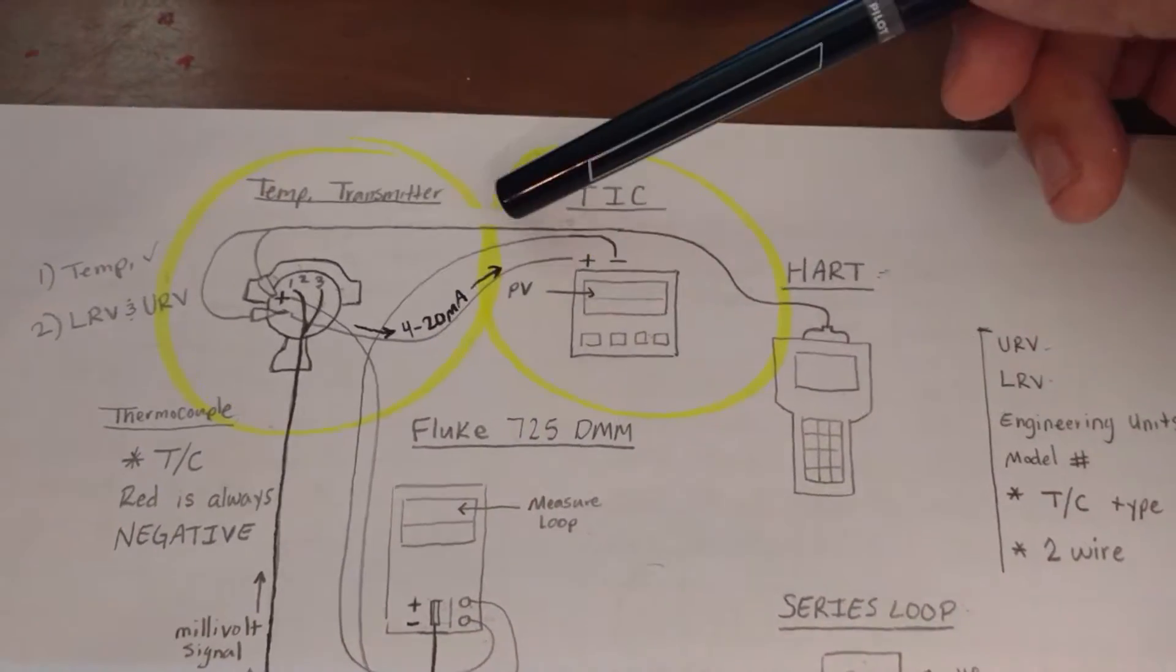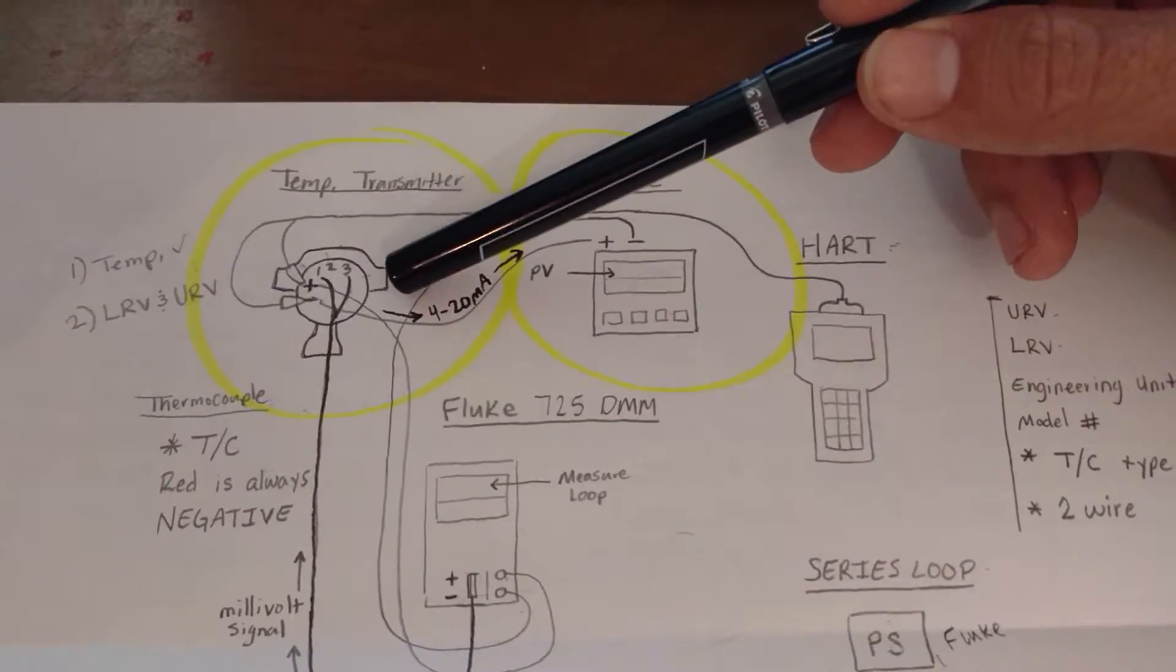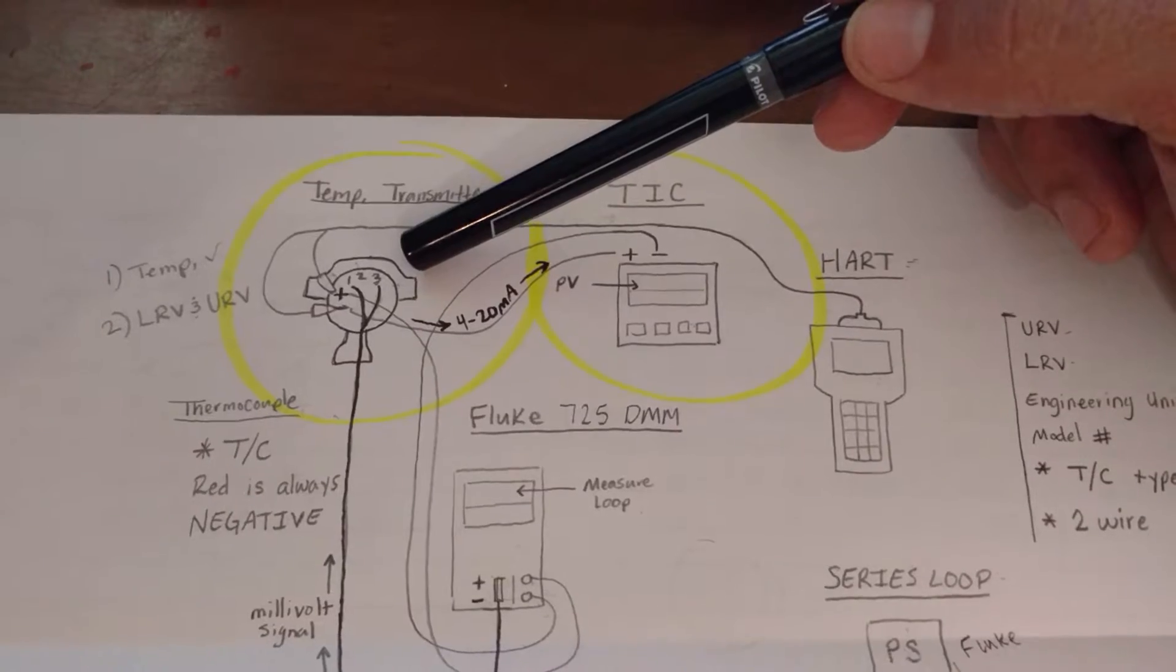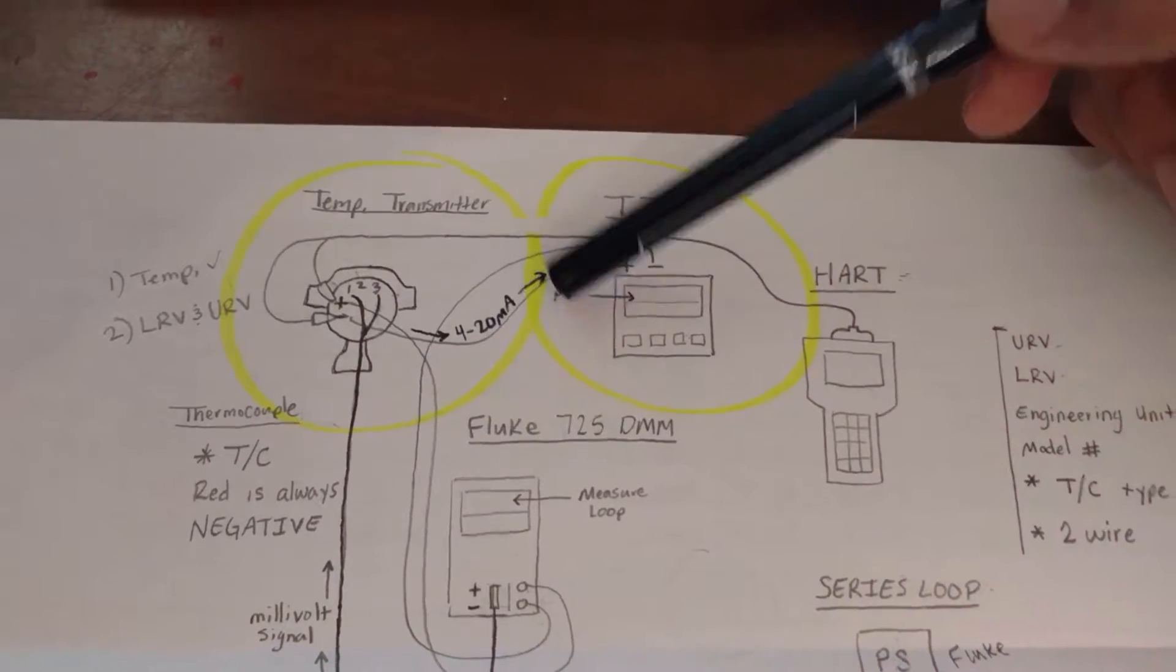It's going to take the millivolts and depending on the upper range value and lower range value that have been programmed into this transmitter, it's going to send a proportional milliamp signal to another device.